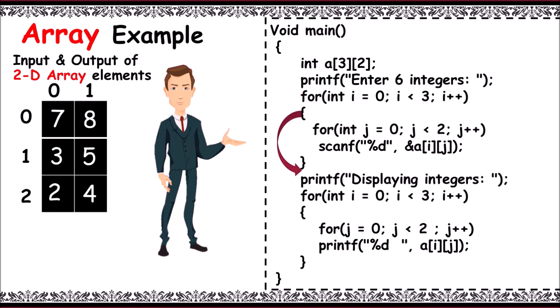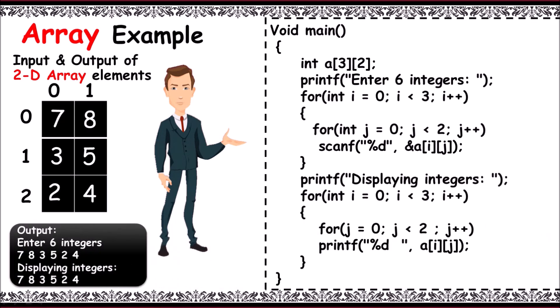Now, to display 2D array elements, again outer loop acts as row and inner loop acts as column. a[0][0] prints 7, and then a[0][1] prints 8. First row. a[1][0] prints 3, and a[1][1] prints 5. Then the last row, a[2][0] prints 2, and a[2][1] prints the last number 4. Control comes to an end. In output, you can observe all the elements in an array printed.